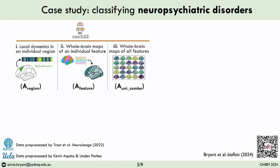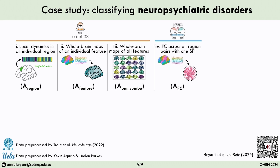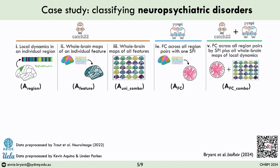We formulated this analytic framework to systematically evaluate the benefits of local dynamics — looking at either multiple time series features in one brain region at a time, or all local dynamics across all brain regions — and then the benefits of pairwise coupling, looking at one statistic for pairwise interactions or functional connectivity metric across all regions at a time, or lastly the benefits of combining information from both local dynamics and pairwise coupling altogether.